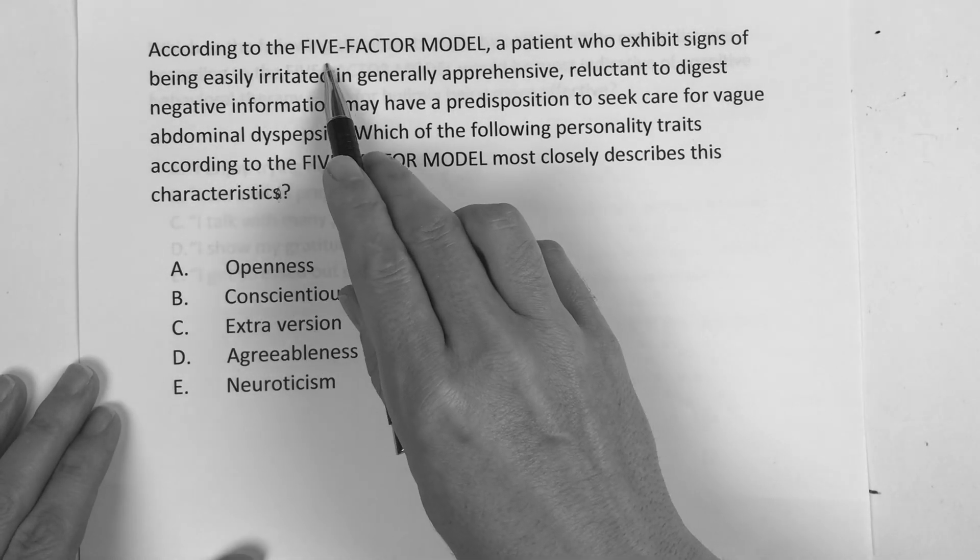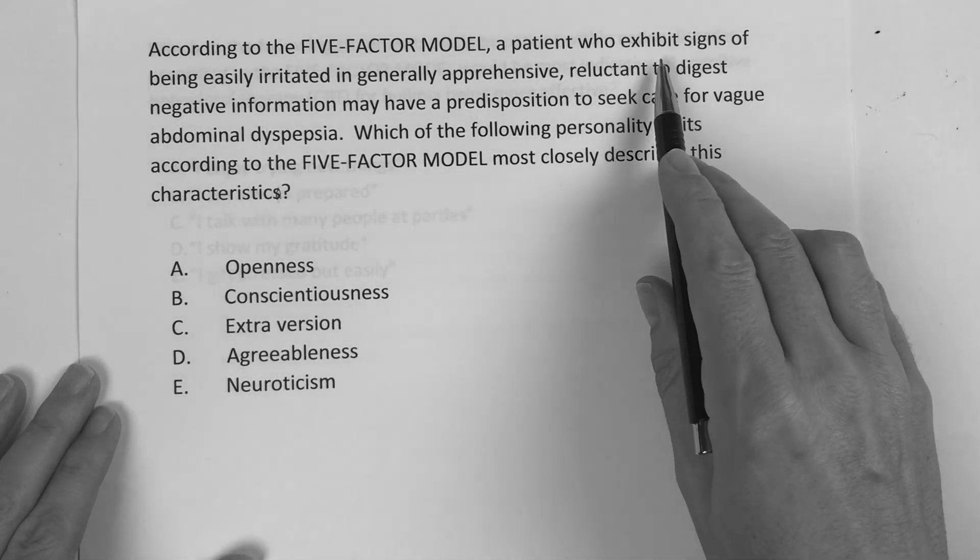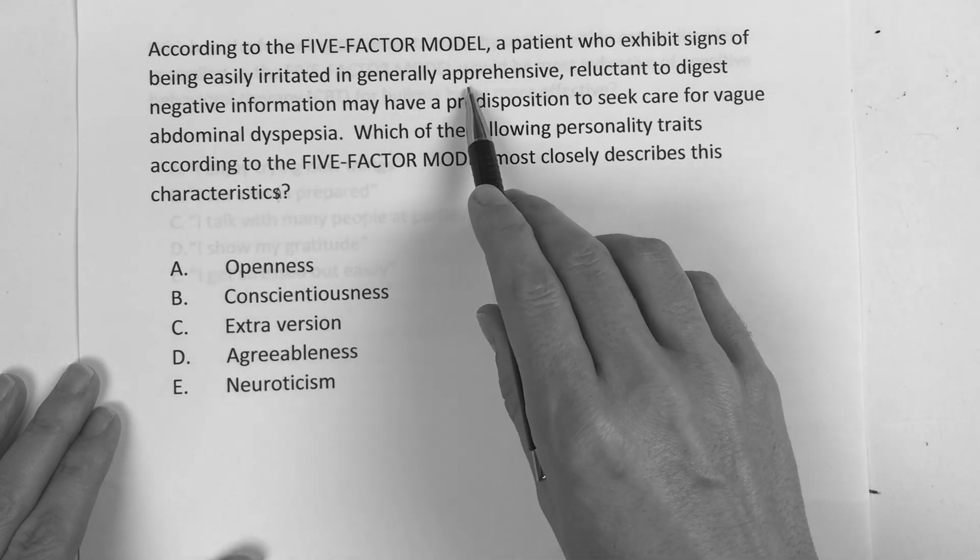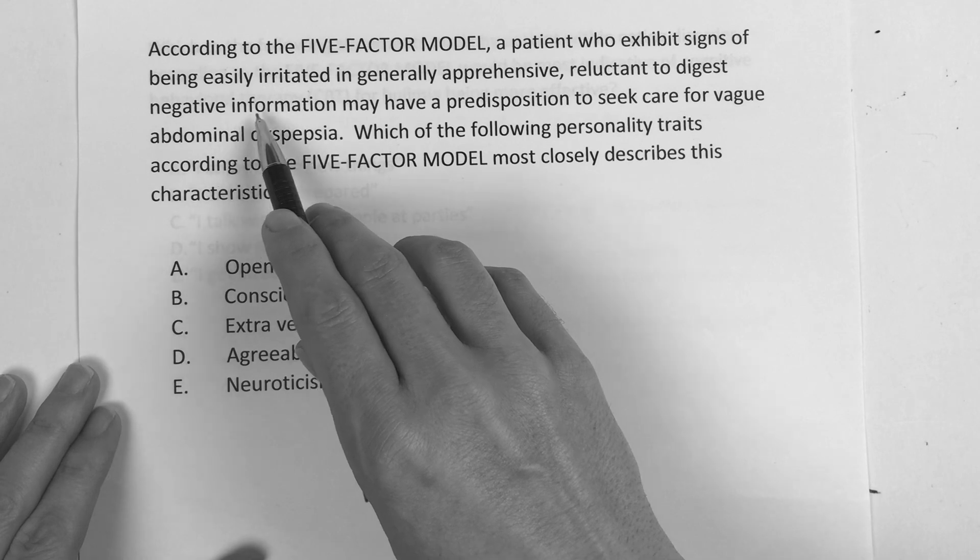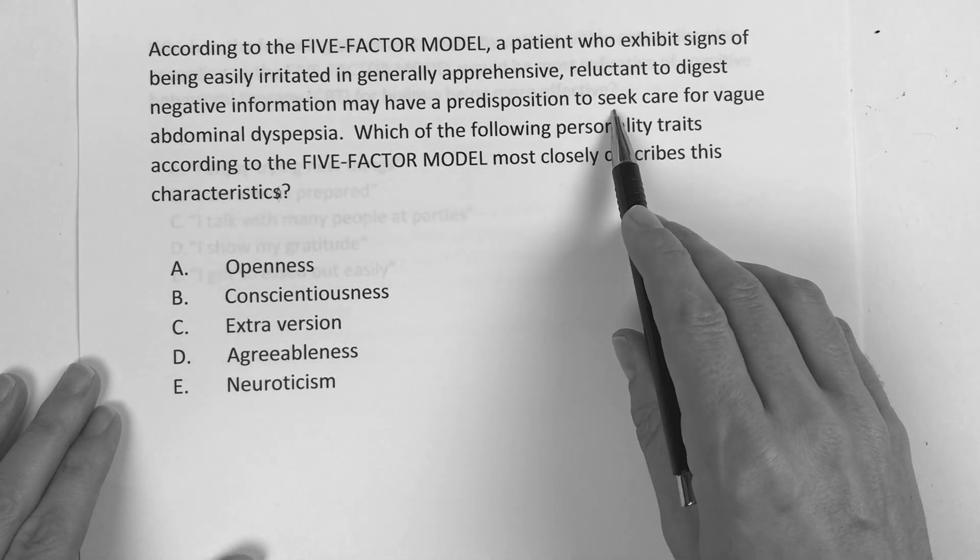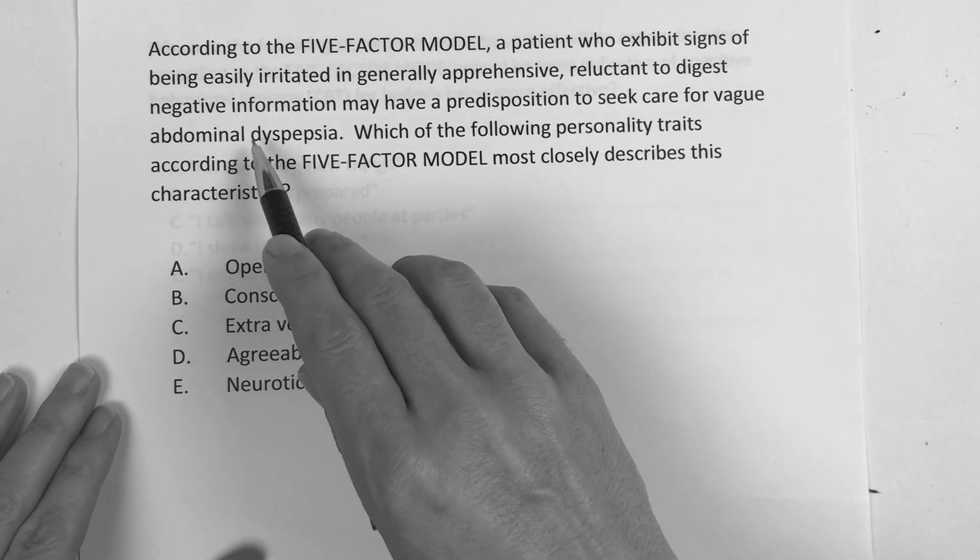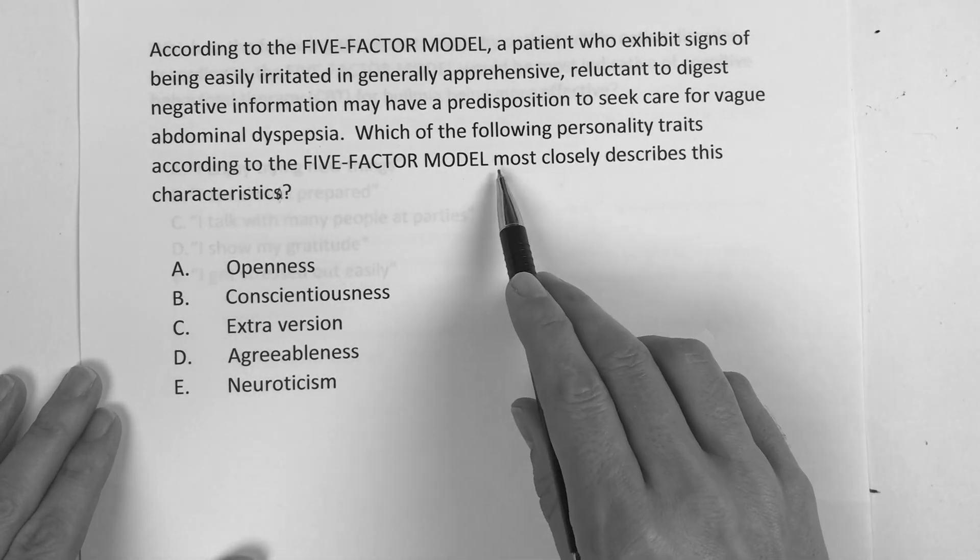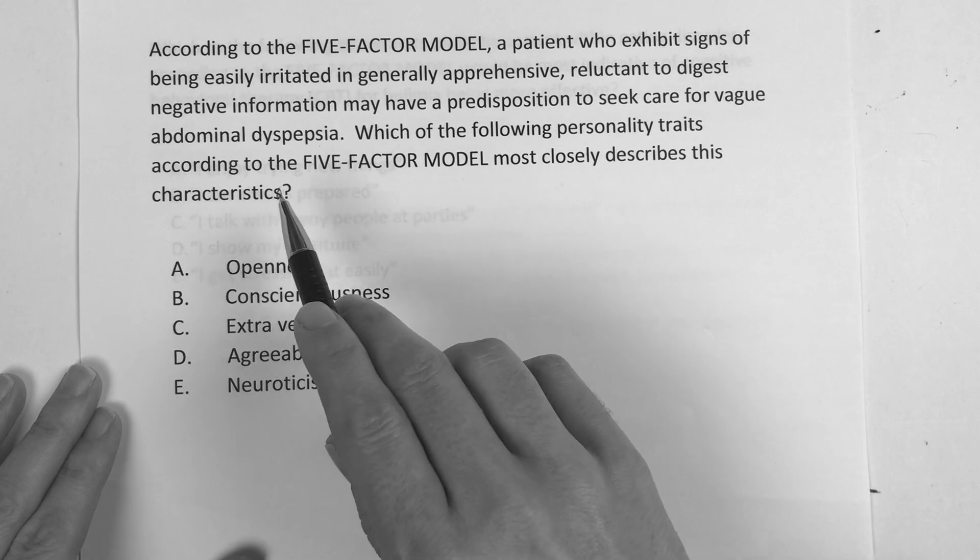It says, according to the five-factor model, a patient who exhibits signs of being easily irritated and generally apprehensive, reluctant to digest negative information, may have a predisposition to seek care for vague abdominal dyspepsia. Which of the following personality traits according to the five-factor model most closely describes this characteristic?